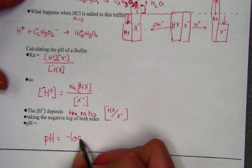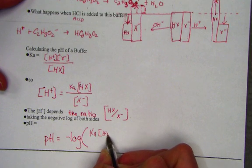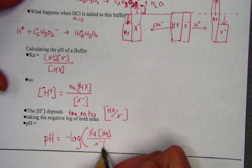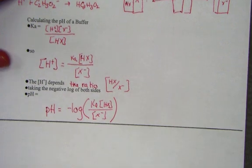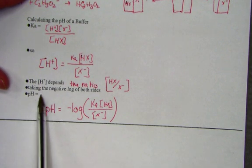And setting this side equal to the negative log of Ka times HX over X negative, we need to simplify this. Again, negative log of hydrogen ion gave us pH.